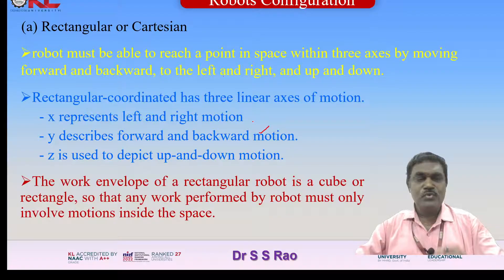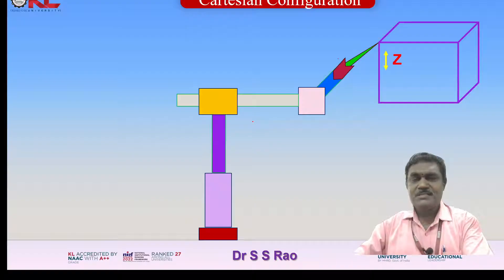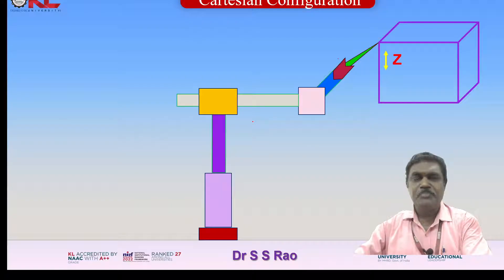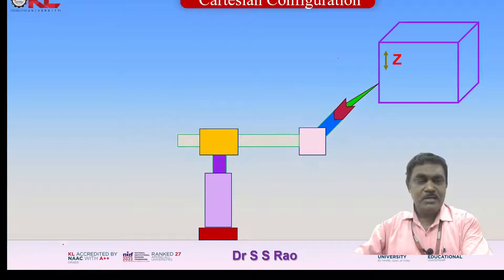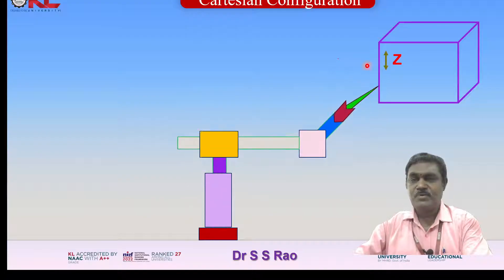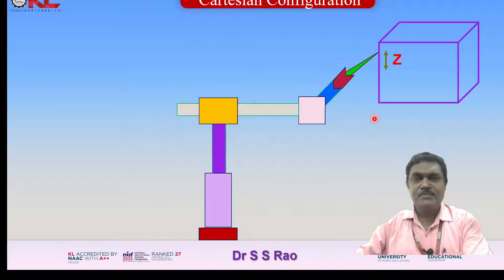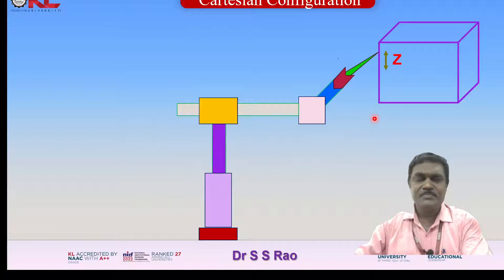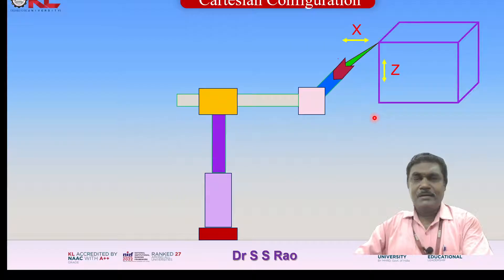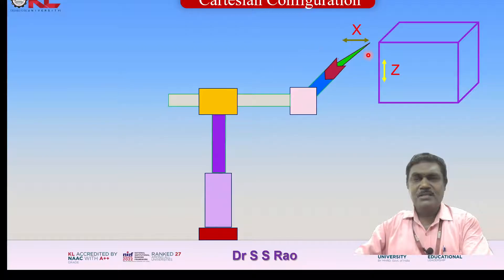The work envelope of a rectangular robot is a cube or rectangle, so any work performed must involve motions inside that space. Let us see a typical example of how the robot movement is configured in the Cartesian coordinate system. The manipulator moves up and down along the Z axis. Next, the left and right motion is designated as the X motion, and the forward and backward motion is designated as the Y axis.